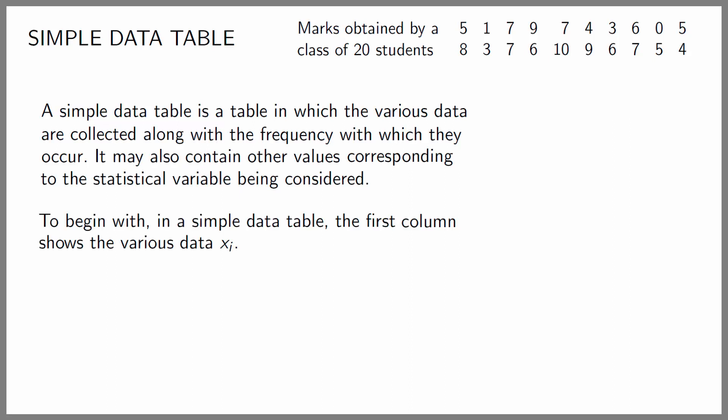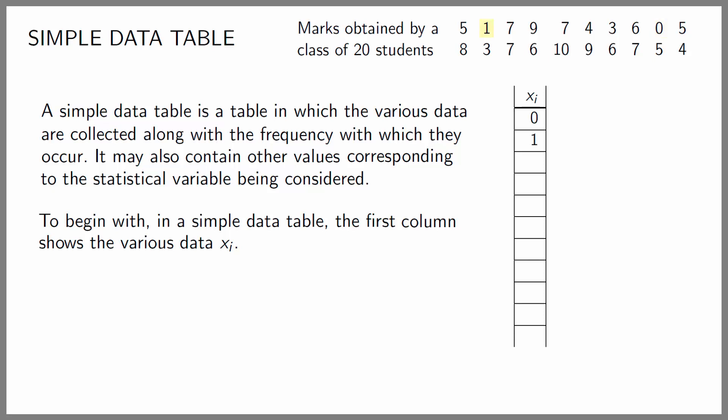In a simple data table the first column contains the various data X sub i. In our case the column indicates the marks obtained: 0, 1, 2 doesn't appear so we don't put it in, then 3, 4, 5, 6, 7, 8, 9, 10.